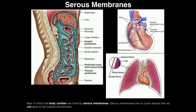Let's talk about the serous membranes that are important for us. We have the pericardial membranes in the pericardial area, pleural membranes for the lungs, and the membranes of the abdominal pelvic cavity are called peritoneum. Now, there's a parietal and a visceral version of each — parietal and visceral.